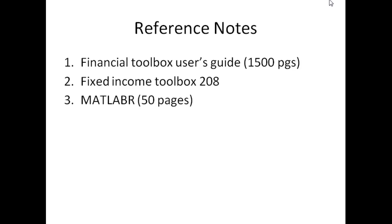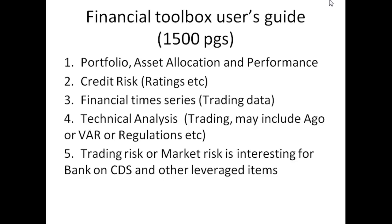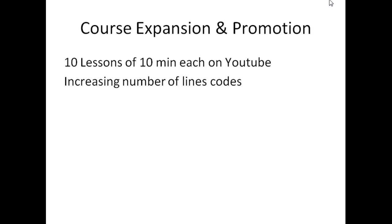If you want to check resources on MATLAB, there are three documents available on the MATLAB website: the Financial Toolbox User Guide — the most comprehensive guide at around 1,500 pages — the Fixed Income Toolbox, which is a 200-page document, and a 50-page comparison between MATLAB and R. The course focuses on five areas: portfolio, credit risk, financial time series, and market risk, delivered in 10 lessons as 10-minute YouTube videos, or you can join my course on WSIG as well.